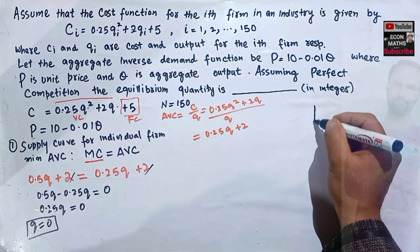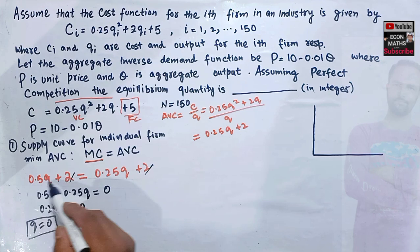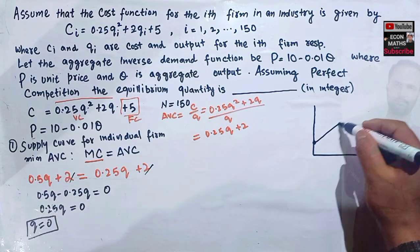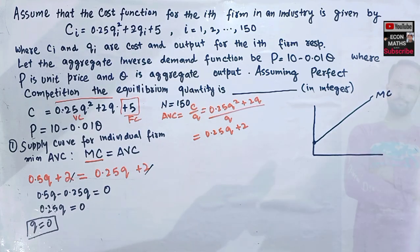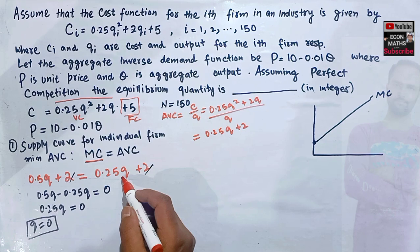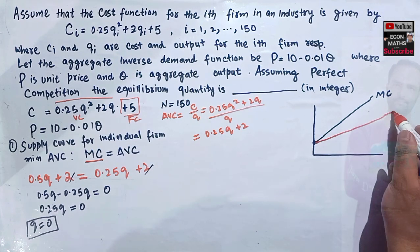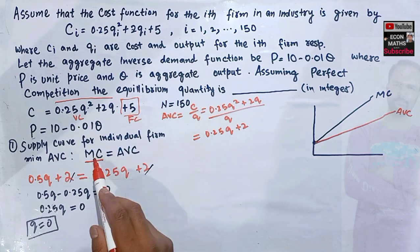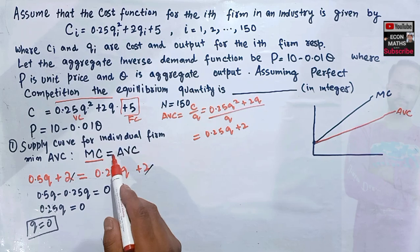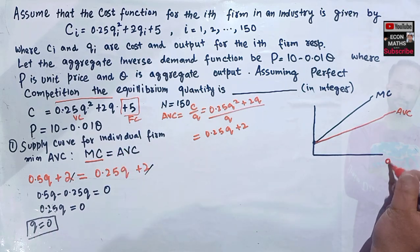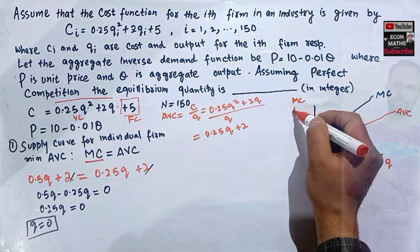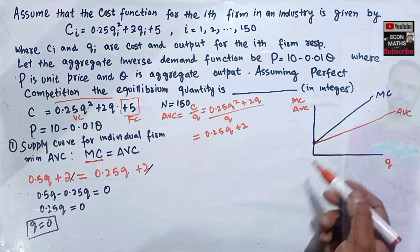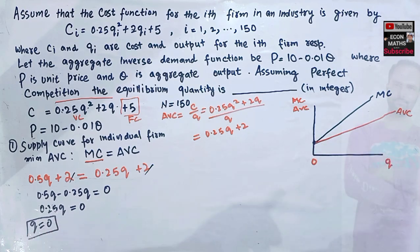Graphically, the marginal cost curve has intercept 2 and slope 0.5, while the AVC has the same intercept of 2 but a smaller slope of 0.25. The minimum of AVC occurs where MC and AVC intersect, which is at q = 0. On our graph with quantity on the x-axis, this intersection happens right at the origin.